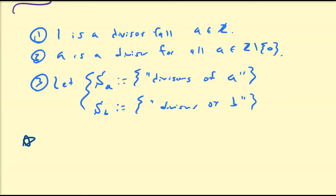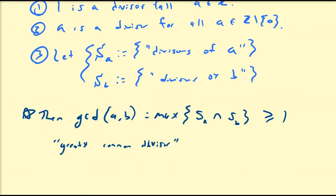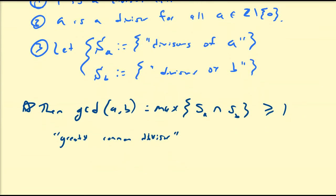We define the greatest common divisor of A and B to be equal to the maximum value that is in both of these sets — namely, the intersection of S_A and S_B. Clearly, this number is always greater than or equal to 1 and less than or equal to the maximum of A and B.